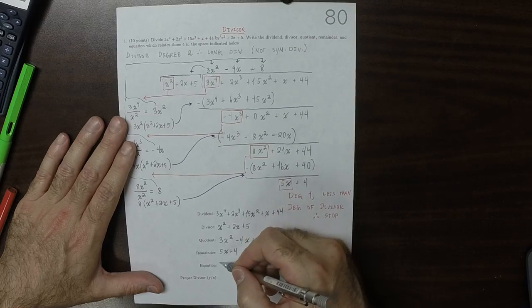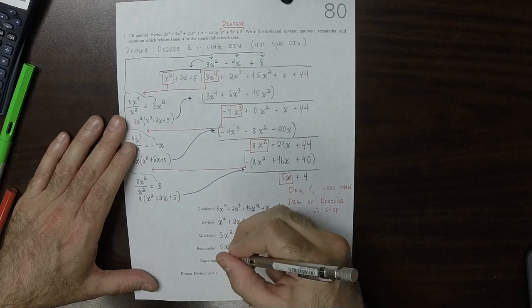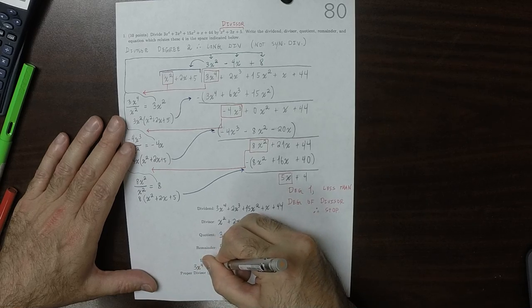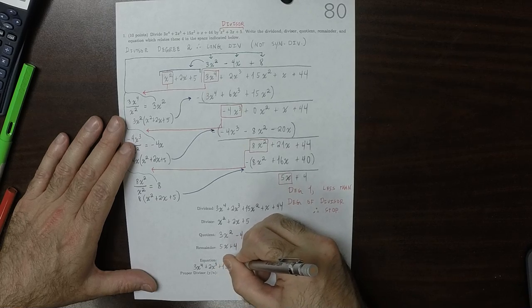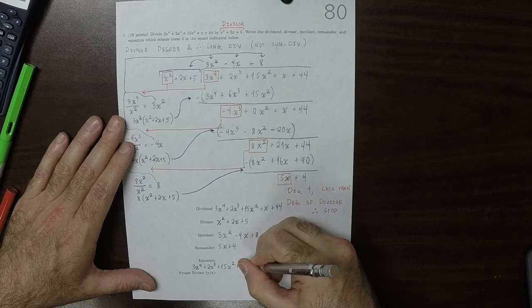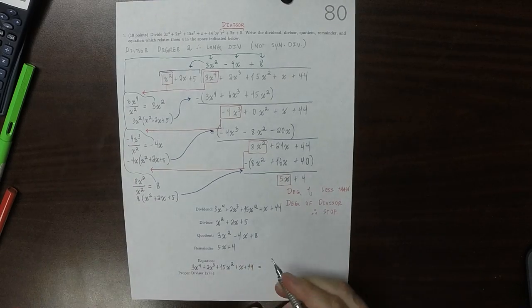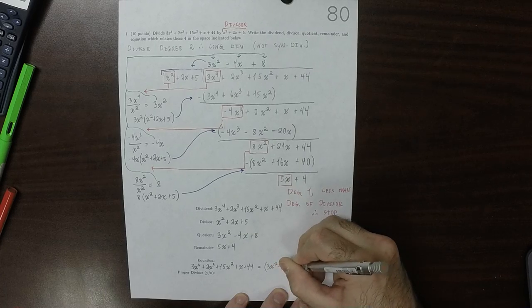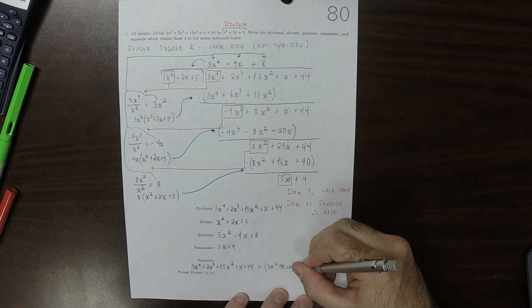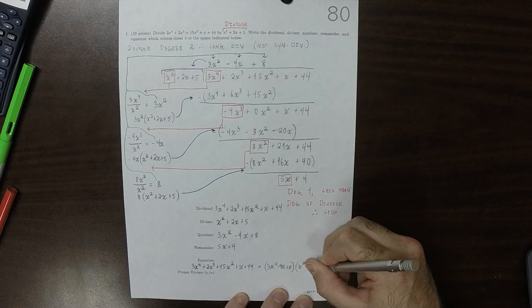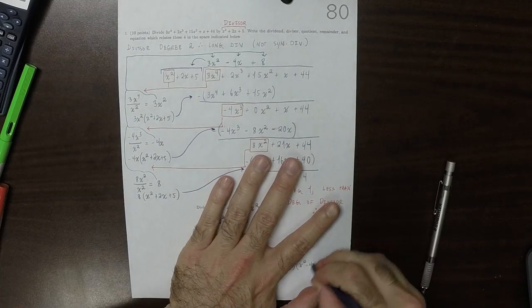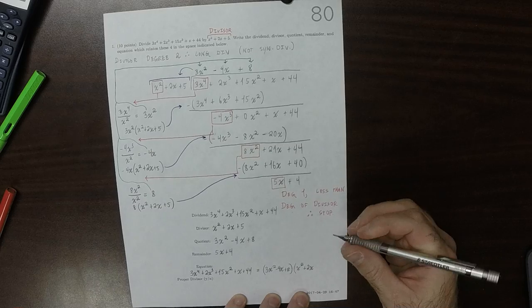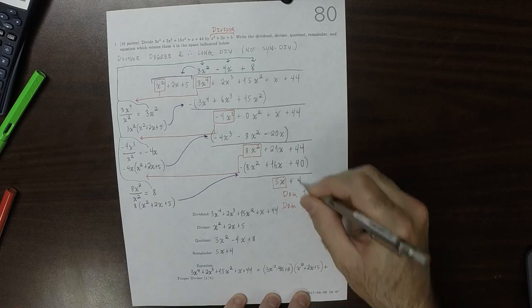All 4 of these can be combined into a single equation. 3x to the 4 plus 2x to the 3 plus 15x to the 2 plus x plus 44 equals the quotient 3x squared minus 4x plus 8, multiplied by the divisor x squared plus 2x plus 5, plus the remainder 5x plus 4.